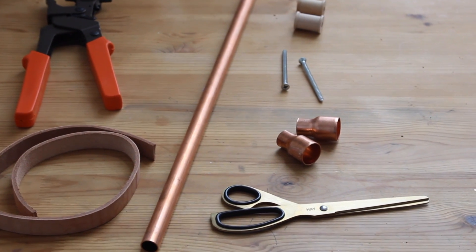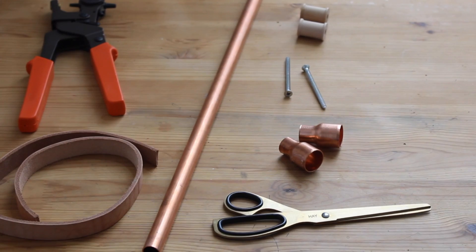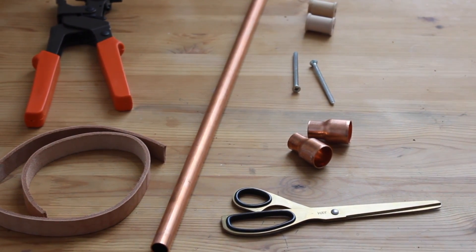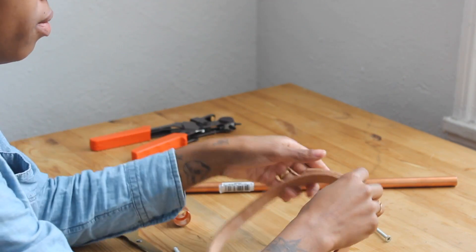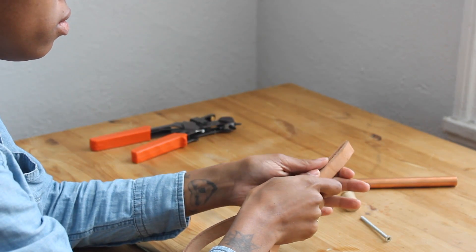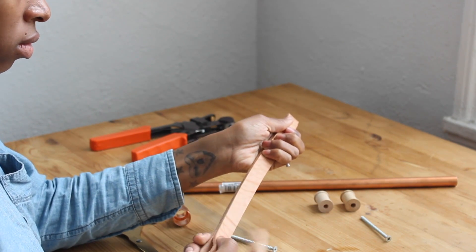So these are all of the pieces that I need in order to make my DIY hanging wardrobe. Now I'm just folding the leather in half so that I can have two even leather strips.